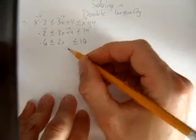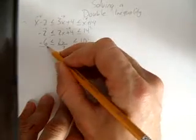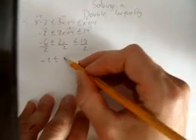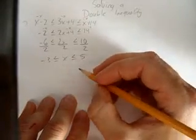And so our last step is just to divide by the coefficient of x, in this case 2, but we must do that equally to all three parts. And we get negative 3 is less than or equal to x, which is less than or equal to 5. That's our solution.